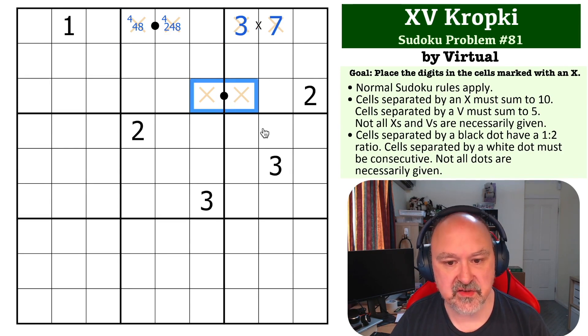Now we look at this black dot. Well, this can't be 3-6 because you can't put a 3 in either of these cells, and it can't have a 2 on it. So it can't be 1-2 and it can't be 2-4. So this is a 4-8, but we know that there's a 4 here. So this is the 8 and this is the 4.